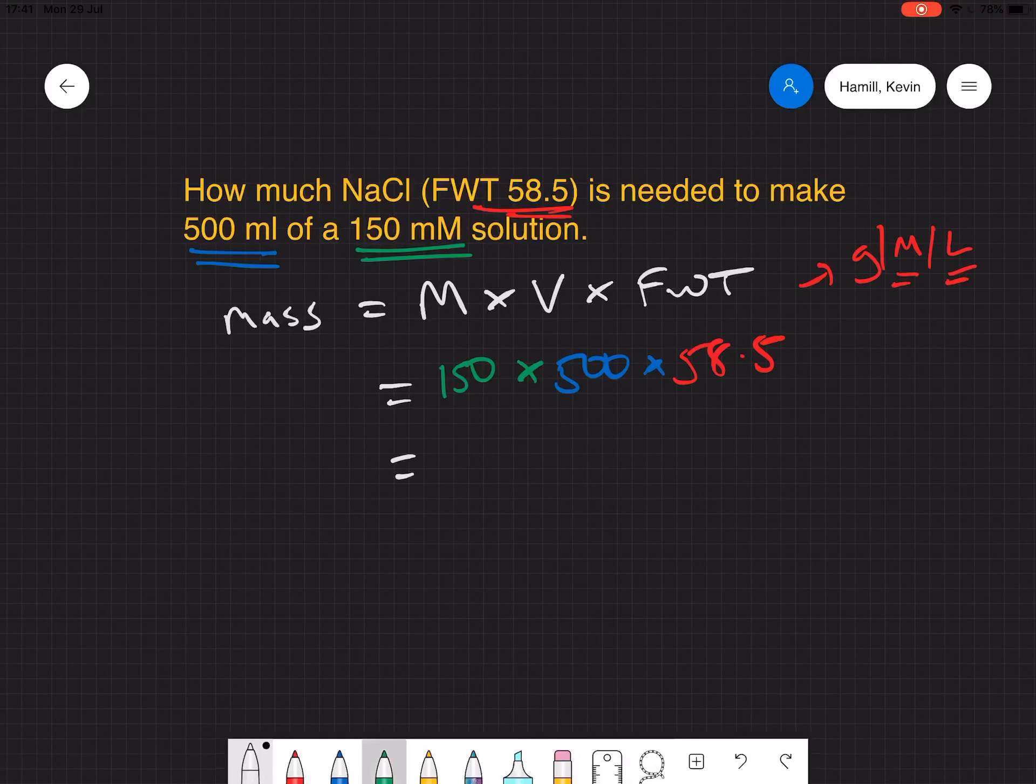So what we'll do now is do that. Our 150 millimolar is 0.15 moles, and we'll multiply that by 500 mils in liters, so 0.5 liters, and then we're still multiplying by 58.5 grams per liter.